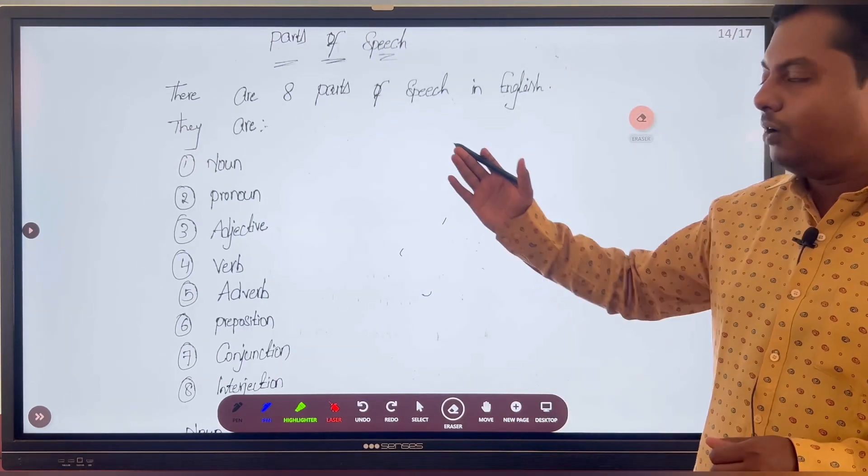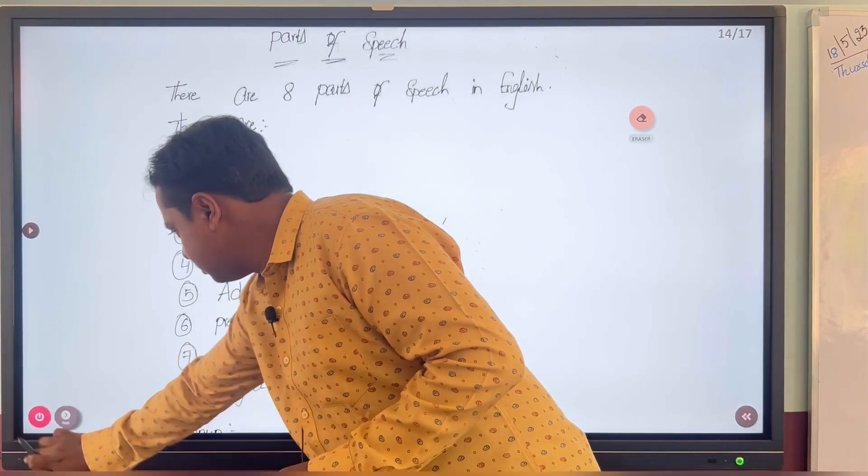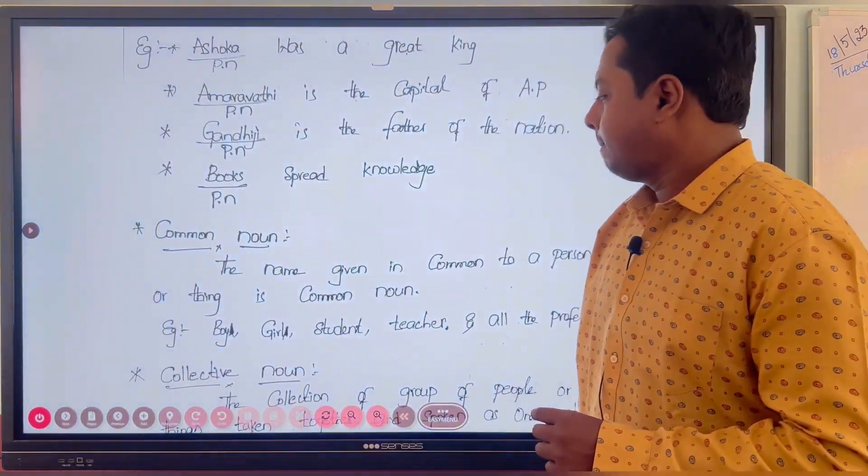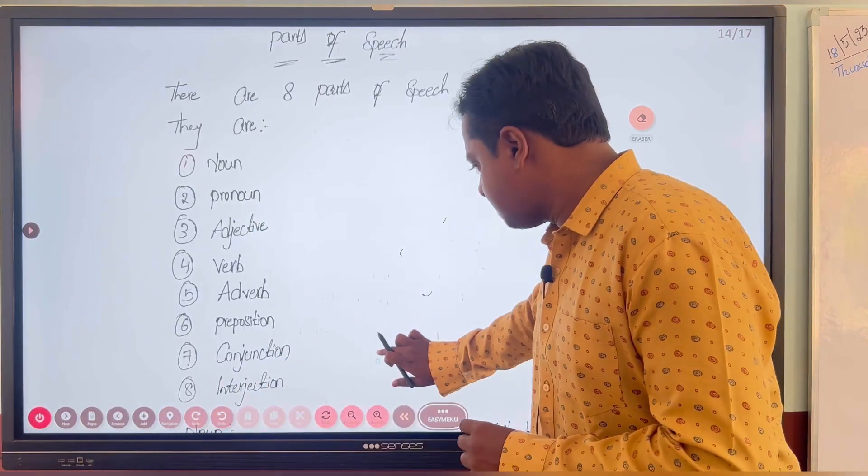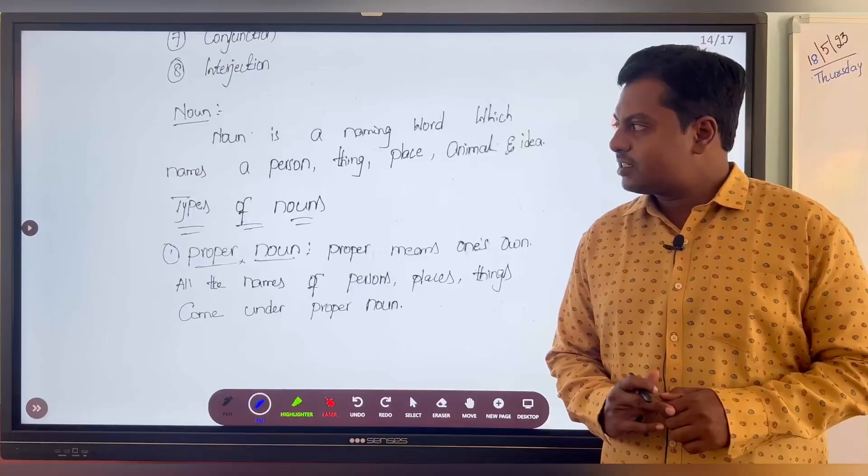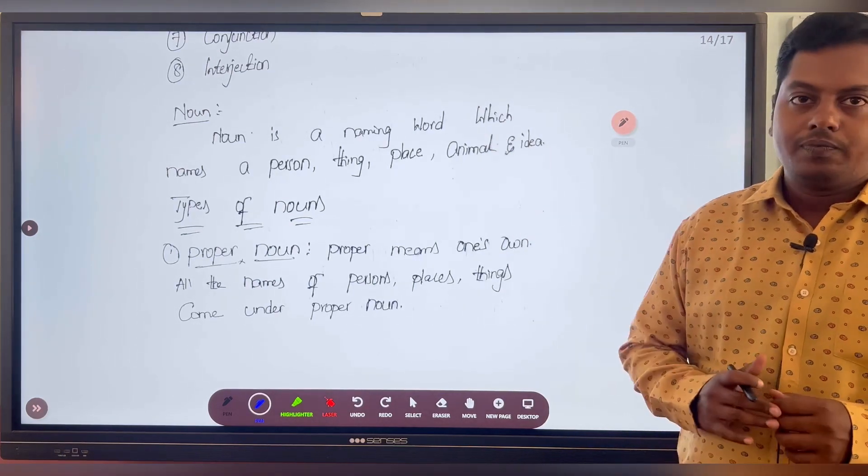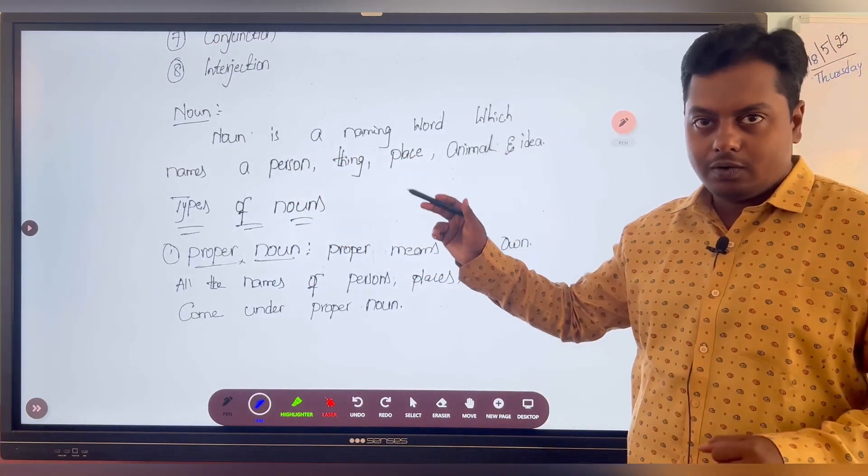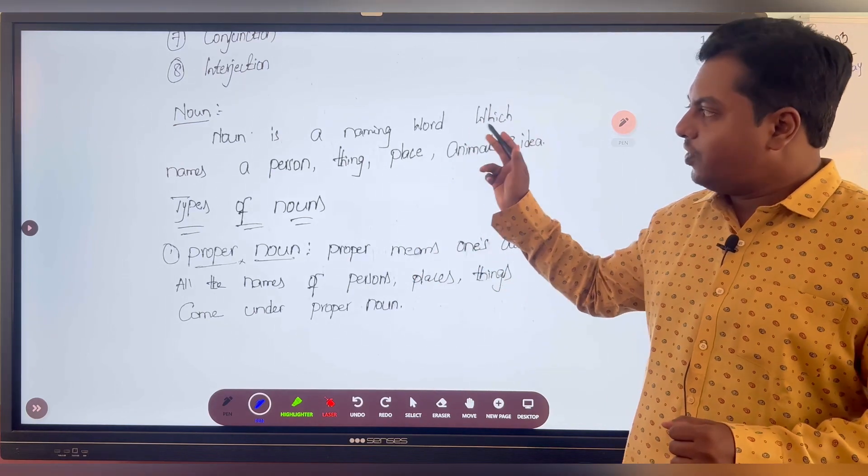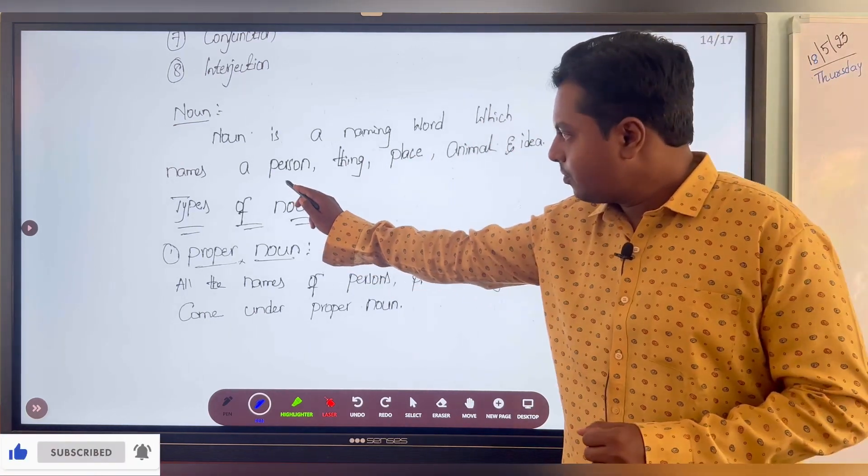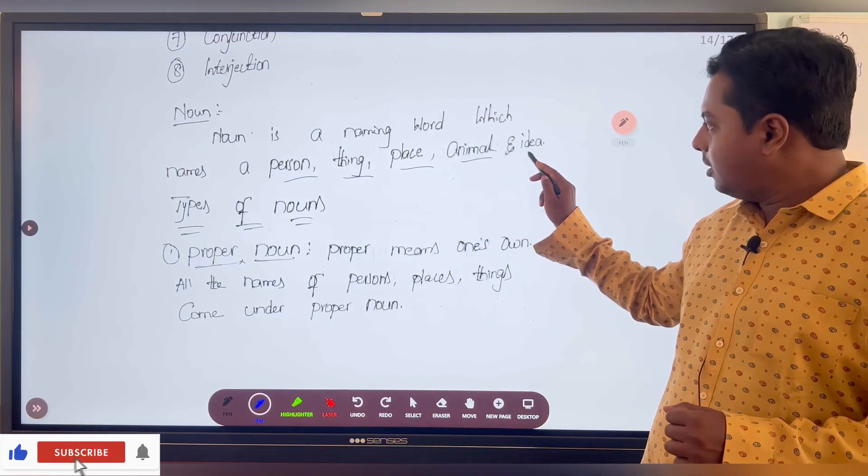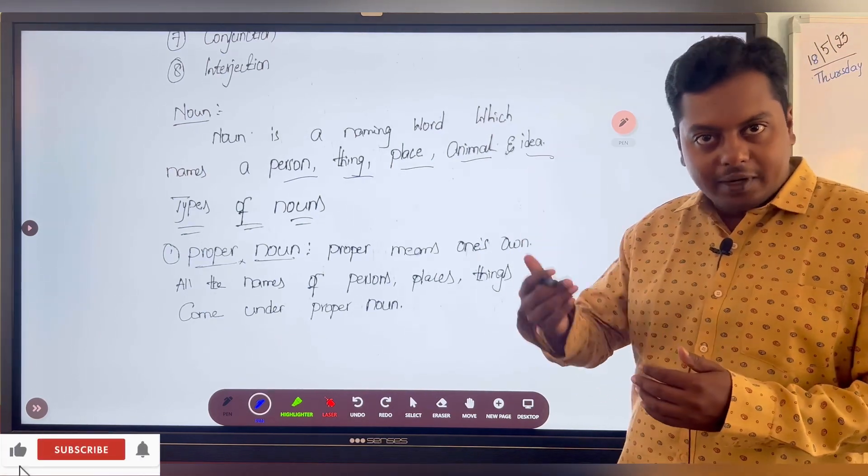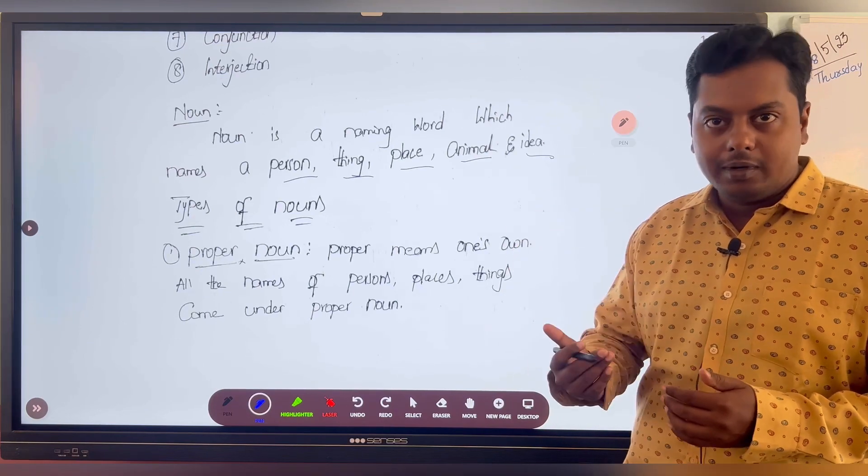So today we will discuss what is a noun. The first part of speech is a noun. What is a noun? Noun is a naming word which names a person, a thing, place, animal, and idea. Noun names a person, thing, place, animal, and idea.